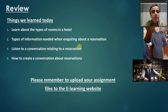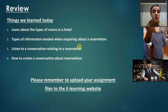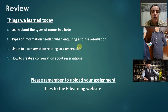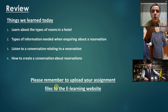We'll quickly review some of the things we learned today. At the beginning, we learned about types of rooms in the hotel — single, double, rooms with balconies. We looked at the types of information needed when inquiring about a reservation, and then we used all of this information to create a dialogue about making a reservation. I hope you all found this useful. Please remember to upload your assignment files to the e-learning website — check them carefully and make sure everything is complete before you upload.